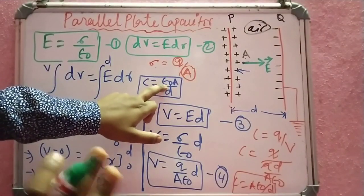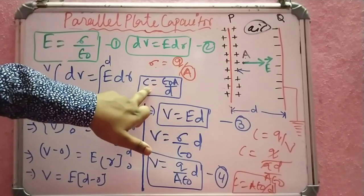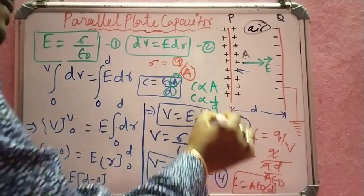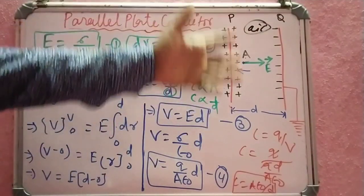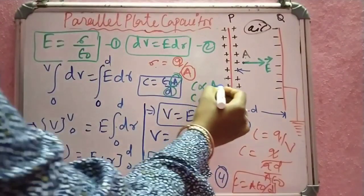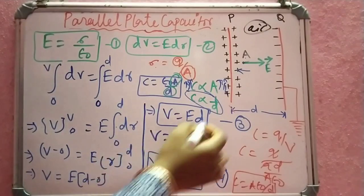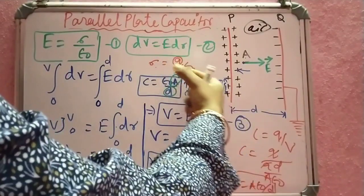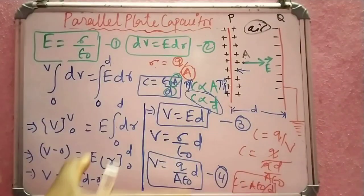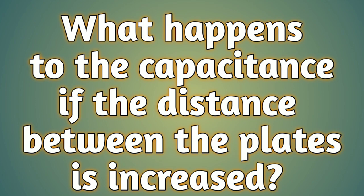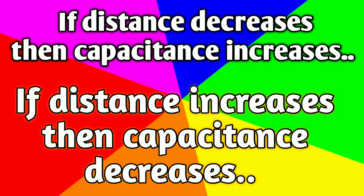With ε₀ as a constant, the capacitance depends on area A and distance d. Capacitance is directly proportional to area and inversely proportional to the distance between the two plates. So if the distance is decreased, the capacitance will increase; if the distance is increased, the capacitance will decrease. You can use this to derive the expression for capacitance of a parallel plate capacitor.